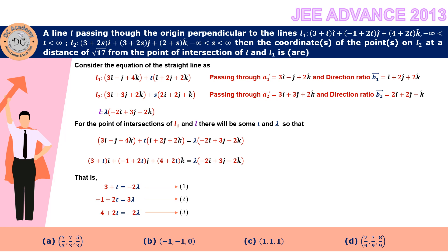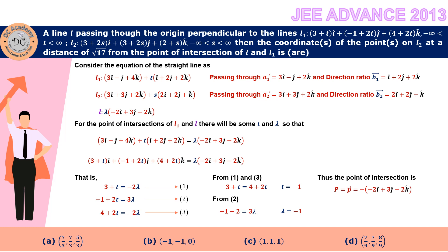From equations 1 and 3, the right-hand side is −2λ in both, so we equate them: 3 + T = 4 + 2T, which gives T = −1. Substituting T = −1 into equation 2, we get λ = −1. The point of intersection P has position vector p = 2i − 3j + 2k, substituting λ = −1 into the equation of L.